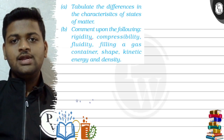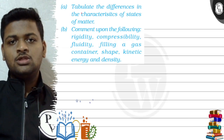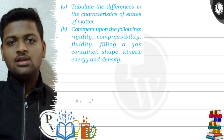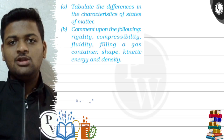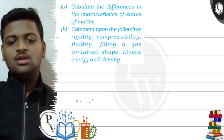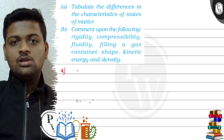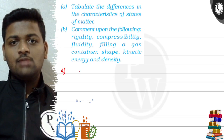Hello, let's see this question. Tabulate the differences in the characteristics of states of matter. And second is comment upon the following: rigidity, compressibility, fluidity, filling a gas container, shape, kinetic energy, and density. So first, we have to tabulate the difference in characteristics.